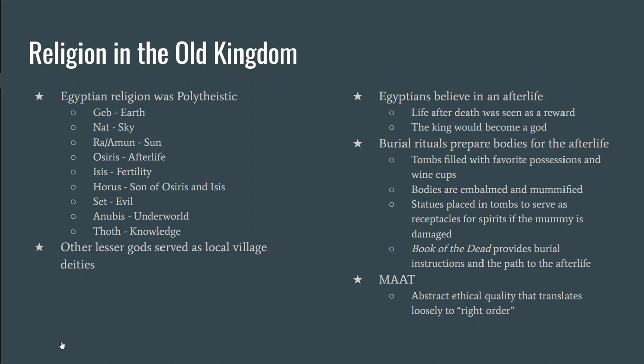Because they thought they would re-inhabit their bodies, their tombs are filled with their favorite things — favorite possessions, wine cups, and in some cases their pets. If they were wealthy, their servants were buried with them too. Statues were often placed in the tomb because if something happened to the body, the statue was what the spirit would inhabit. There was also the most important book in ancient Egypt: the Book of the Dead, which provided burial instructions and instructions on how to reach the afterlife.